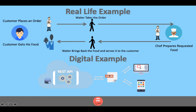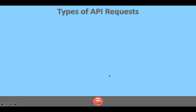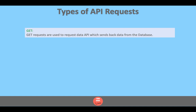Now we need to know the types of API requests. The first one is the GET request. GET requests are used to request data — the API sends back data from the database. It is very simple and easy to use. You can use JSONPlaceholder to try it in your application or program.